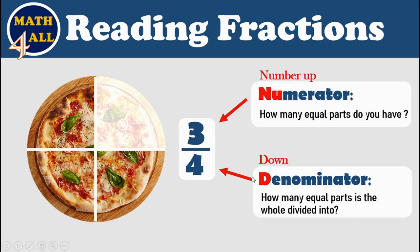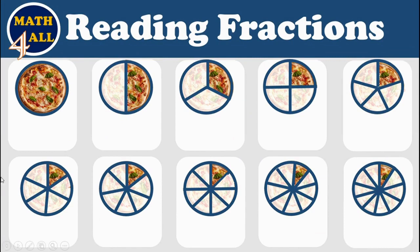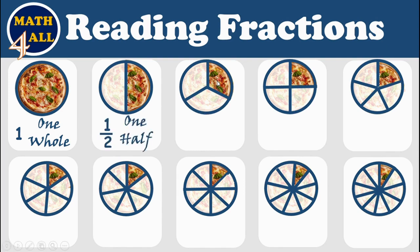Don't forget: denominator starts with D, so you'll remember 'down' — number down, denominator. Now, after knowing the main parts of a fraction, let's learn how to read it. Here in the first picture we have just one pizza — you can call it a full shape or full picture as one whole. Next, we break this picture into two equal parts. You have just one part out of two, so here you have one half.